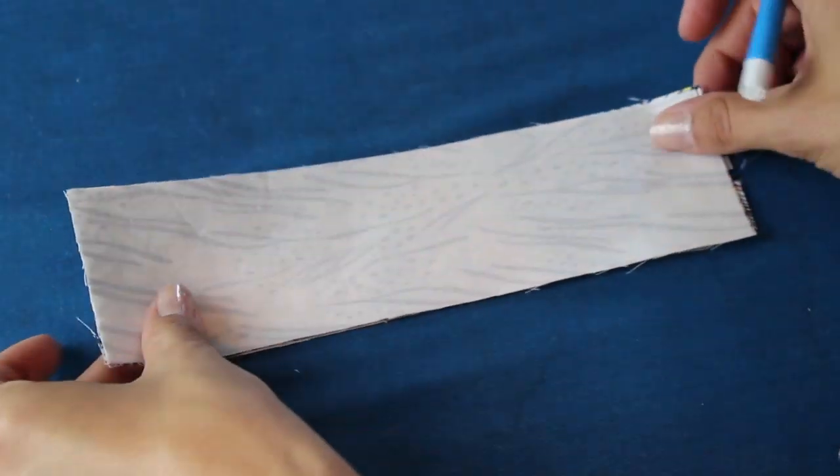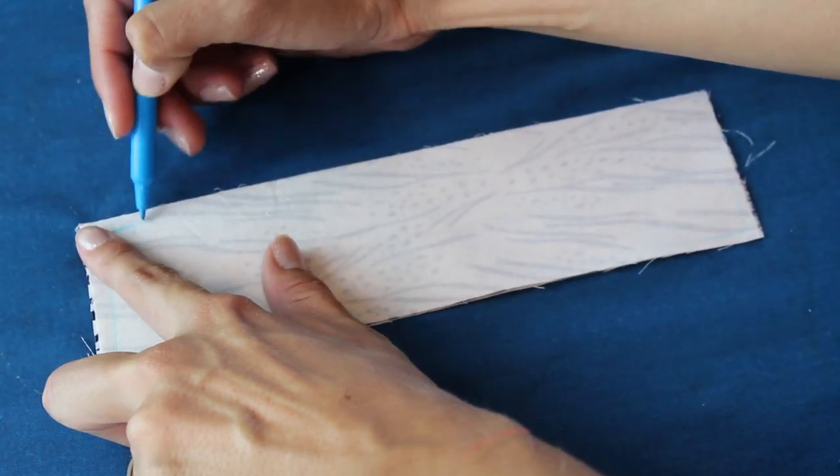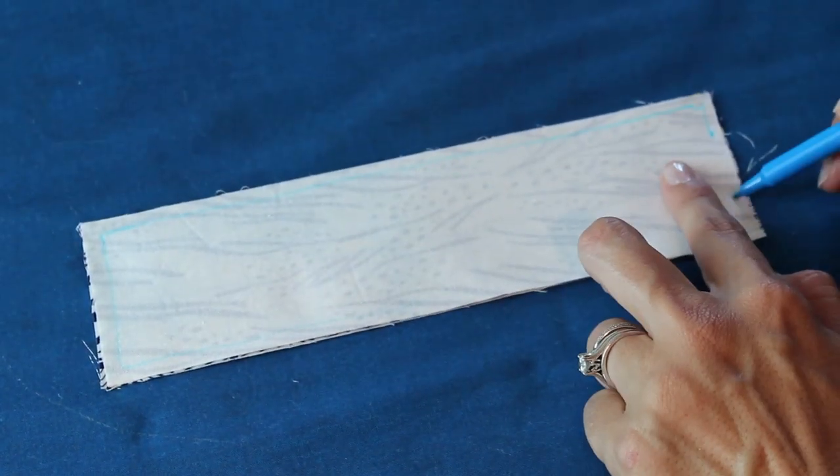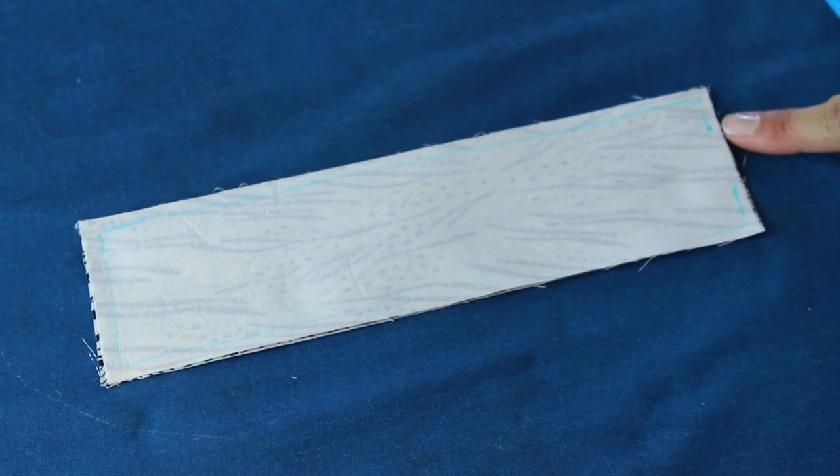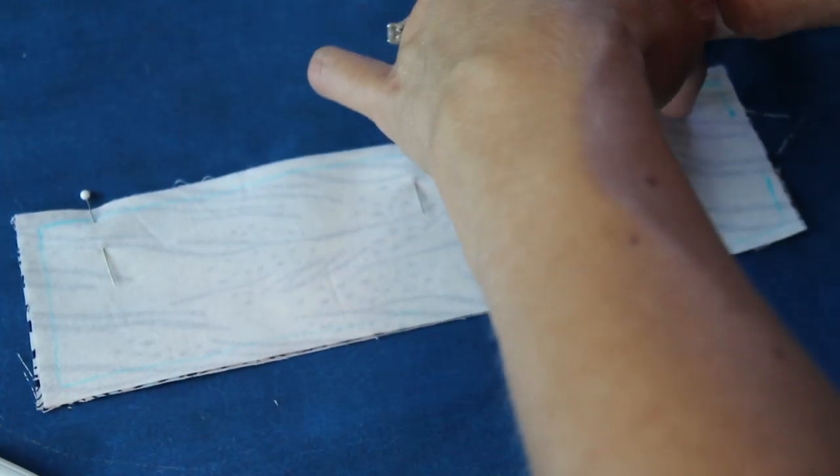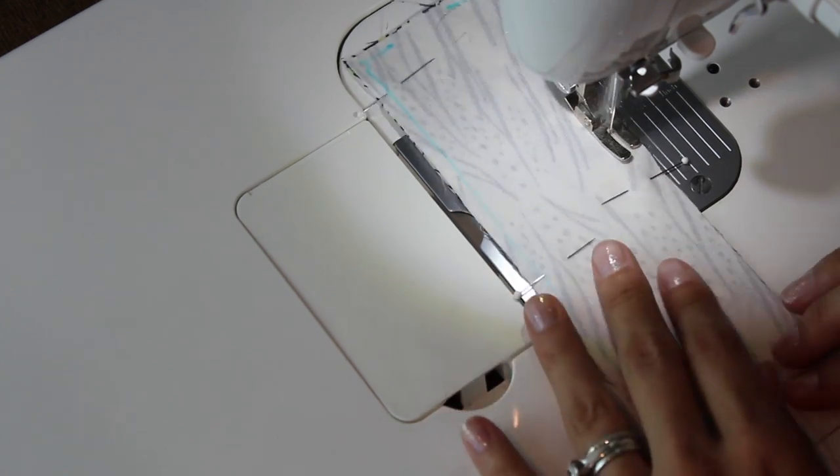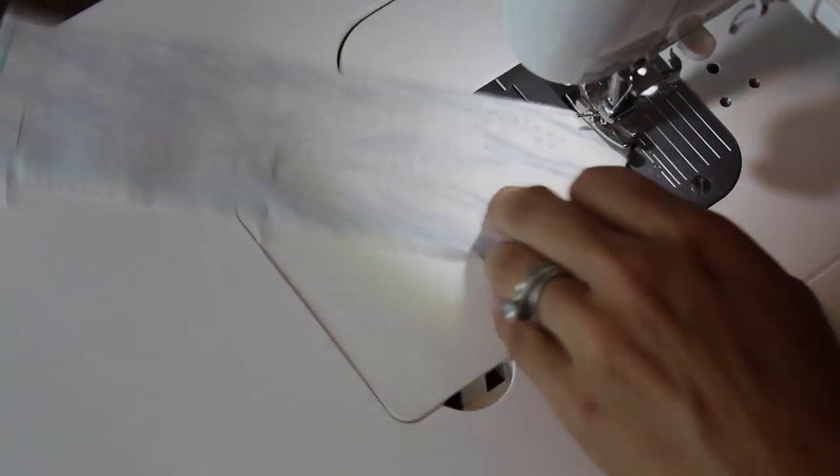Now we're going to place our right sides together for our little handle or our little strap here. And we're going to stitch around. I'm just showing you with the marker to give you a visual. We want to leave an opening. So we're going to be stitching about an eighth of an inch all the way around right sides together. And we left that opening so that we'll be able to flip it right side out. So when you get started don't forget to backstitch.